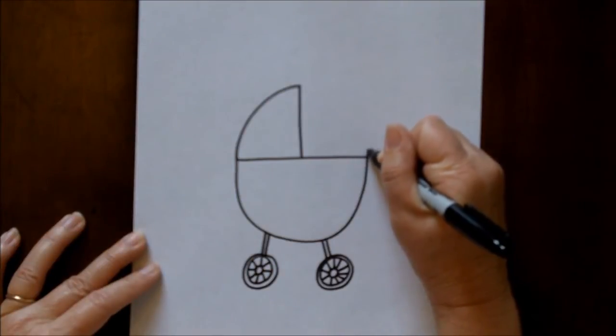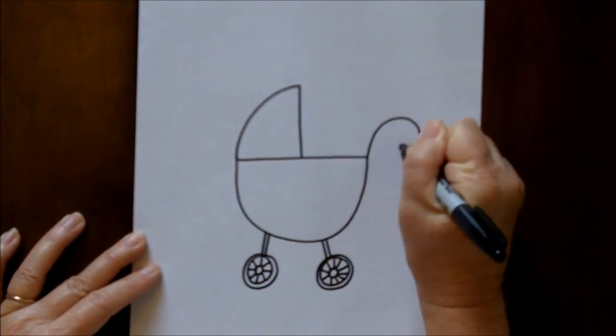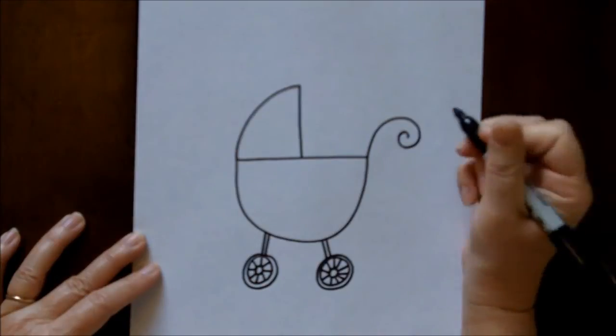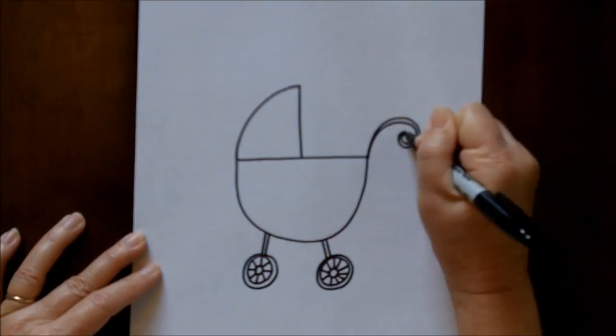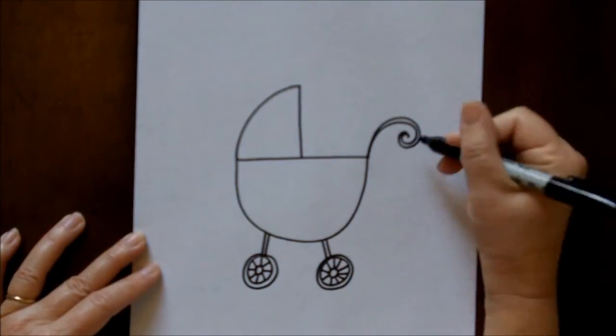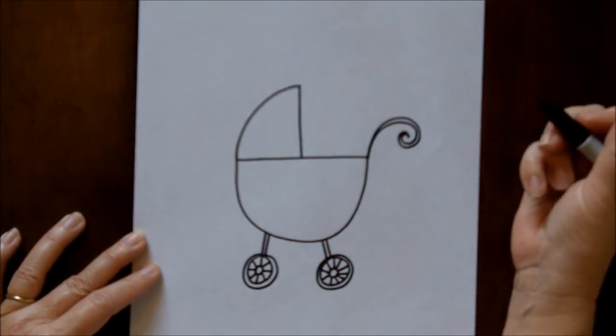Now let's go up to this side. This is going to be the area where the carriage is going to be pushed, so we're going to make a curvy handle and you're going to double that shape like a little spiral at the end.